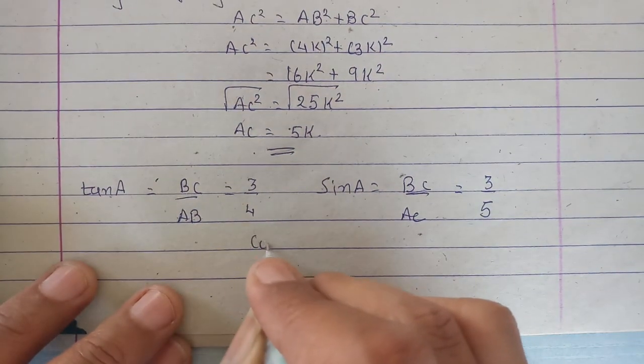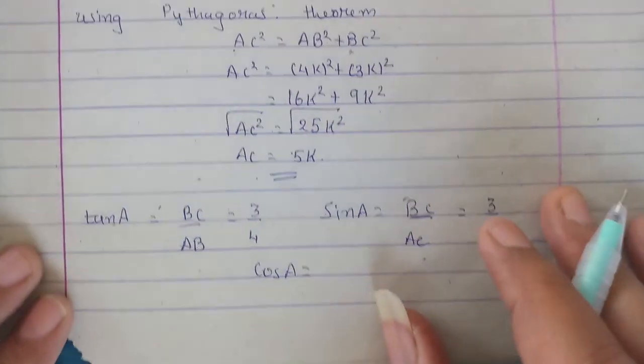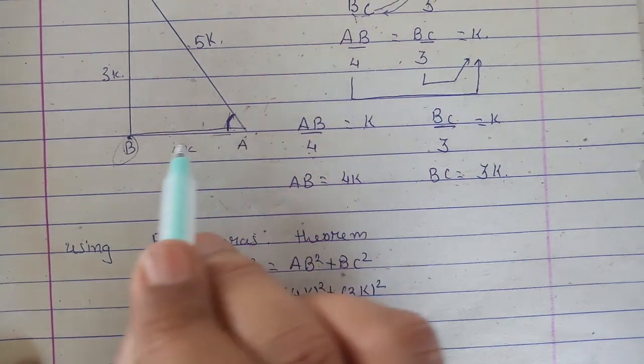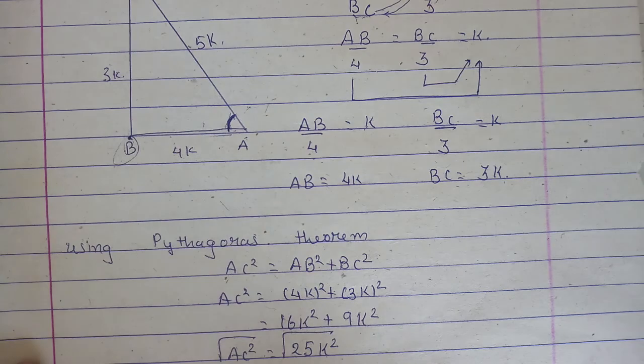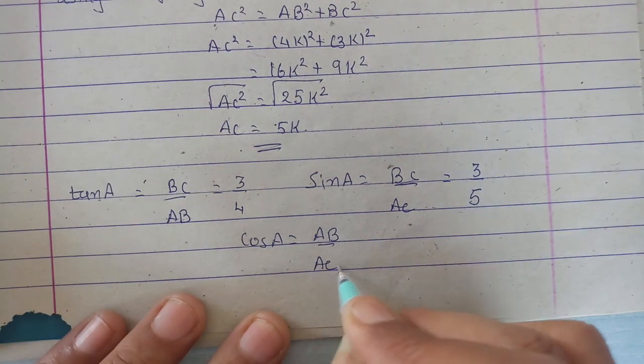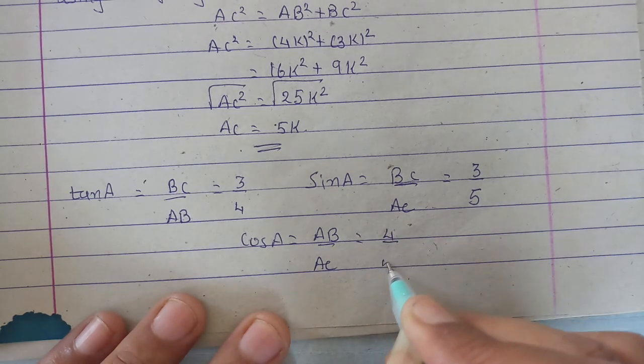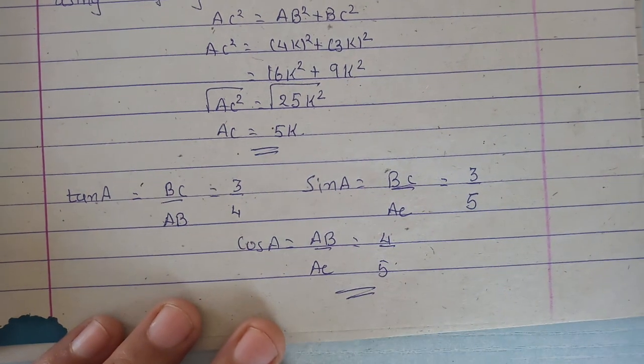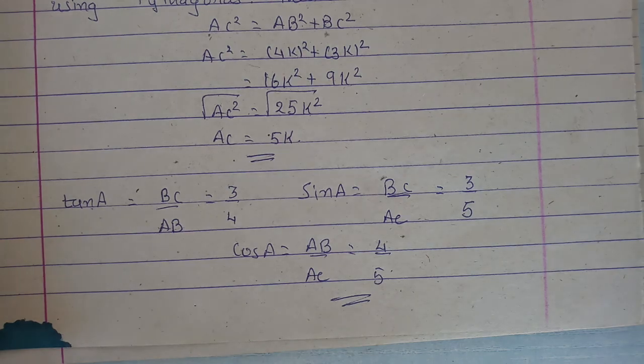And finally, cosA. Cos means adjacent upon hypotenuse. For A, adjacent is AB and hypotenuse is AC. So this is AB upon AC. And this will be 4 upon 5. Got it? Now in the equations we have to put it.